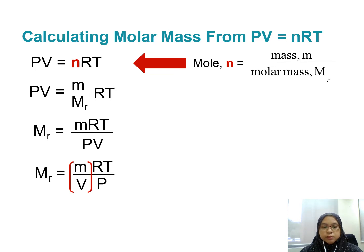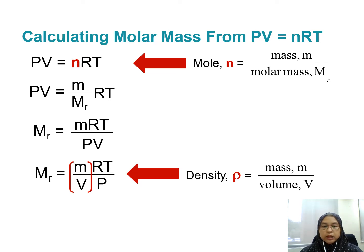Rearranging back the equation gives us MRT over VP, where M over V equals density (rho). So we can rearrange the equation to give us PMr equals to rho RT, where this equation can be used to calculate the density of the gas.